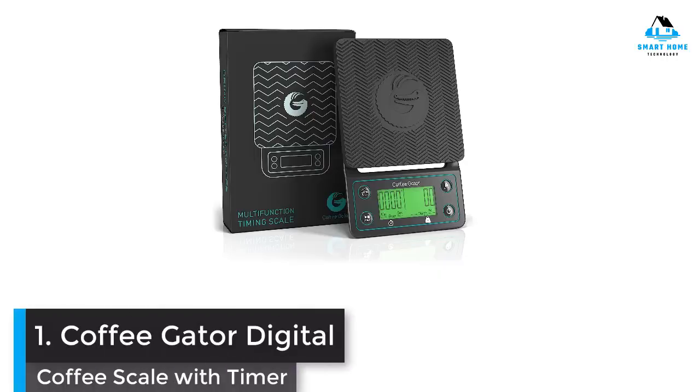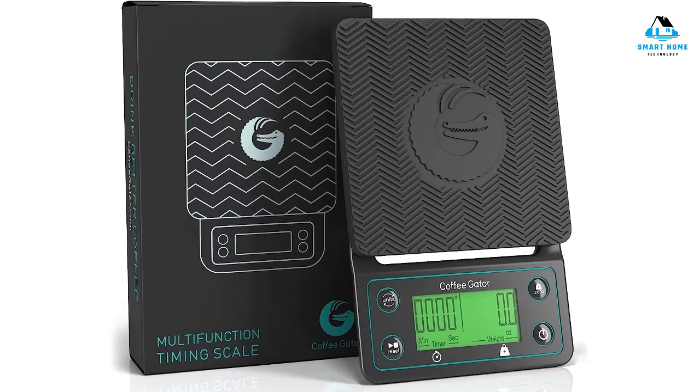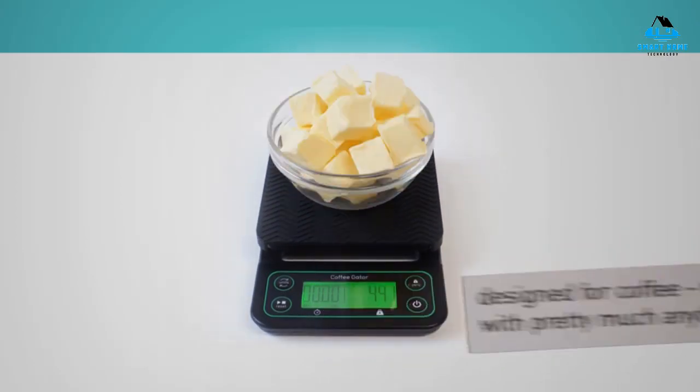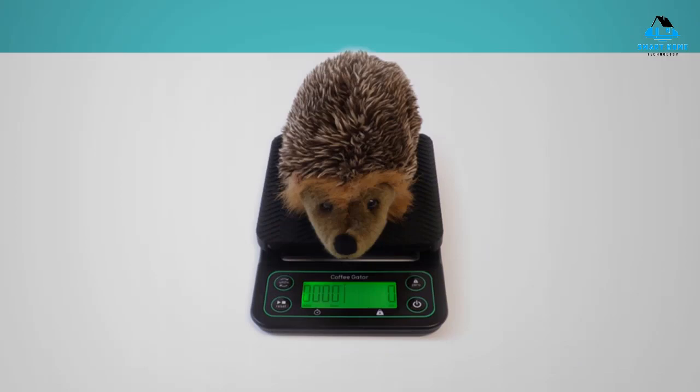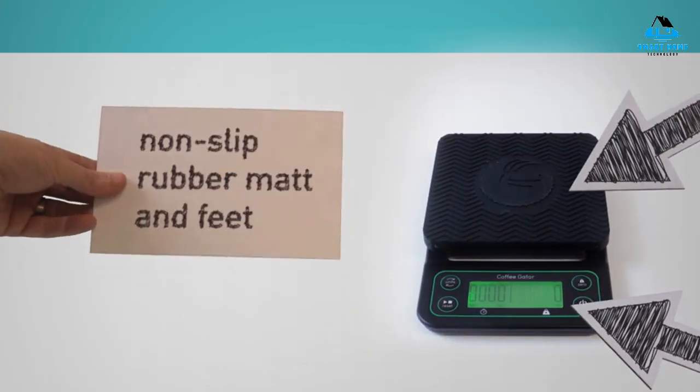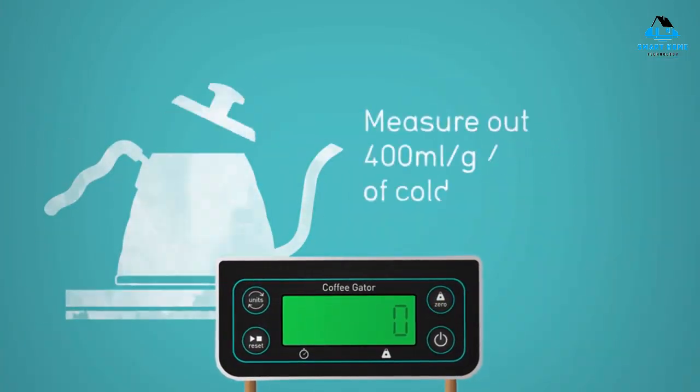Number 1. Coffee Gator Digital Coffee Scale with Timer. The Coffee Gator Digital Multifunction Coffee Scale with Timer offers better functions than many competitors and it comes at an affordable price. That combo lands the scale at the top of list. It can weigh up to 3,000 grams or 6.6 pounds, which is plenty for measuring coffee grounds plus a pour-over device.